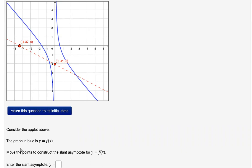Consider the applet above. The graph is in blue, y equals f of x. Move the points to construct the slant asymptote for y equals f of x. Remove these two points and enter the slant asymptote via its equation here.